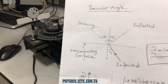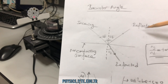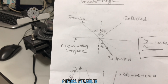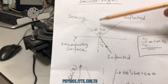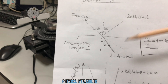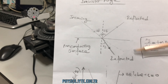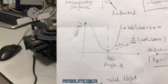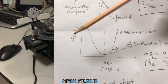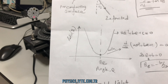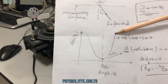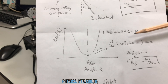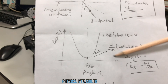As you see, the incoming light comes to the non-conductive surface. It will be reflected and also it will be refracted. The reflected part has polarized light, and we can find the Brewster angle from this formula.